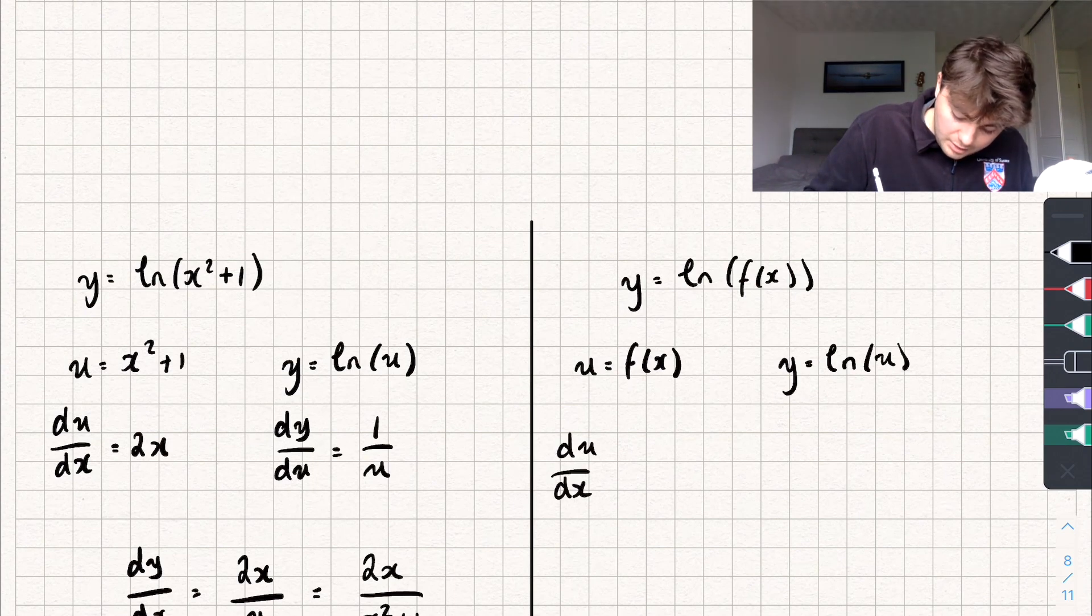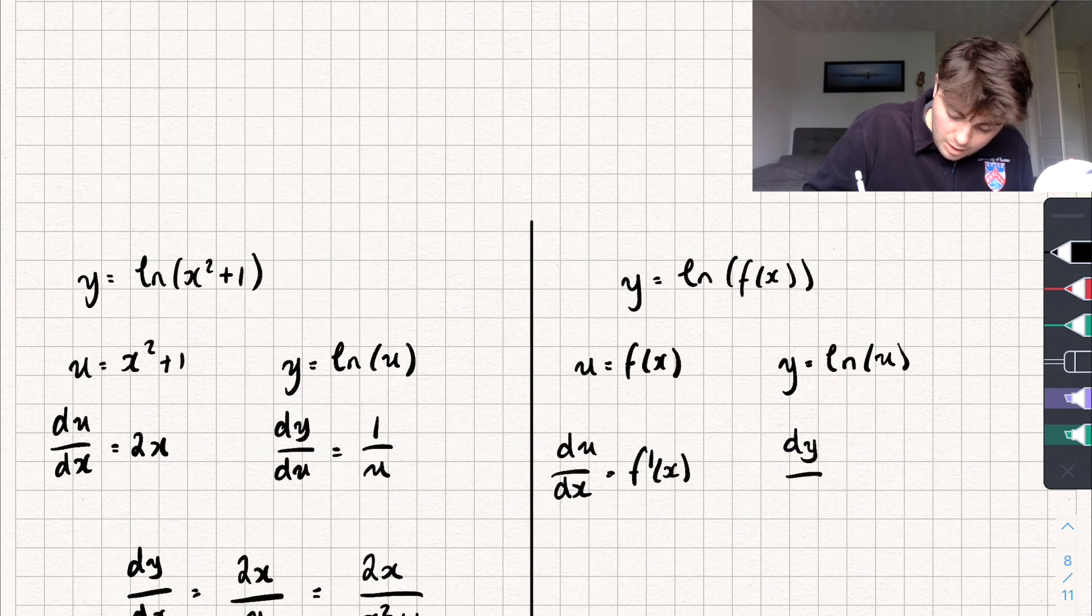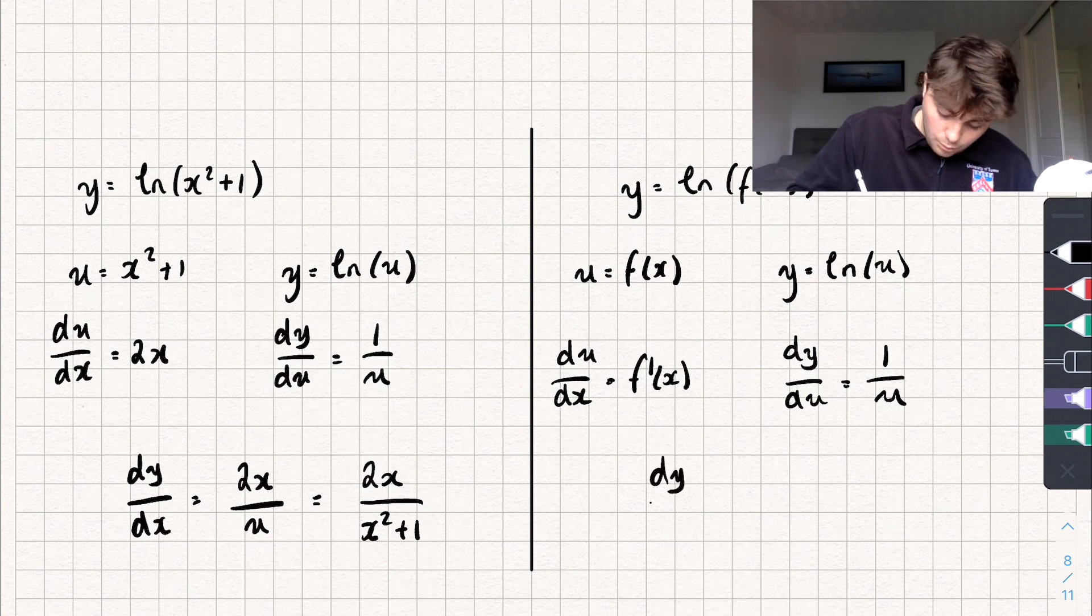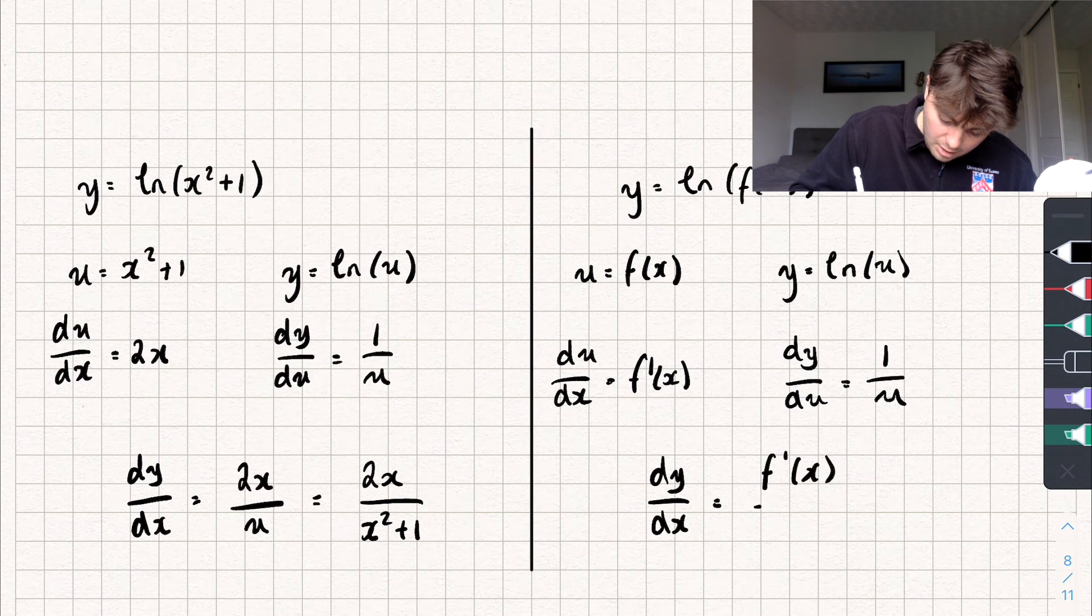So then du by dx is just going to be f dash of x. And dy by du is just going to be 1 over u. And so multiplying these together to get the derivative dy by dx we find that it's f dash of x over u which is just f of x.